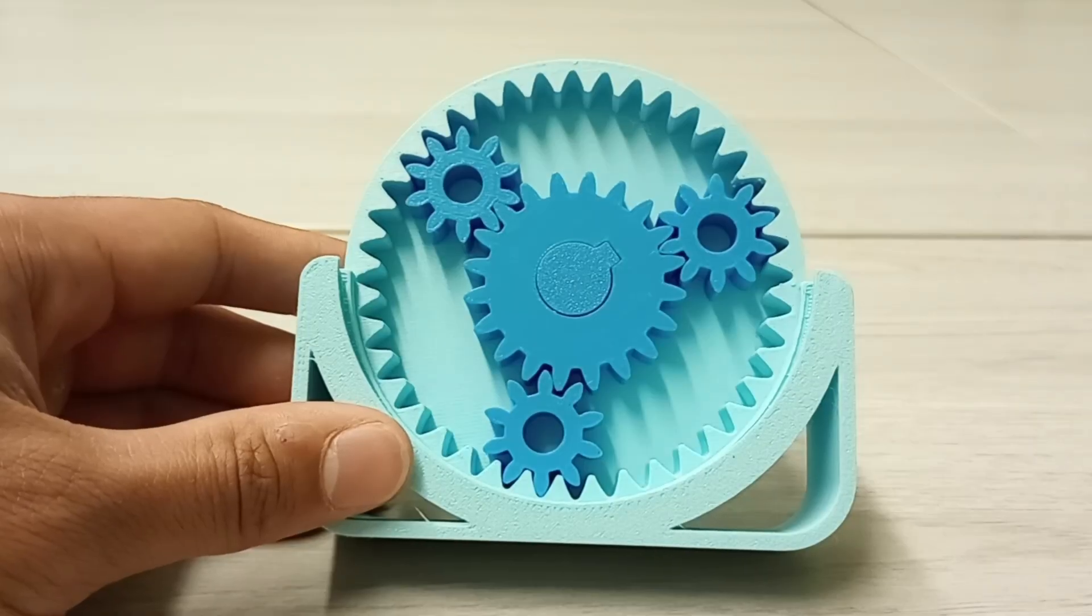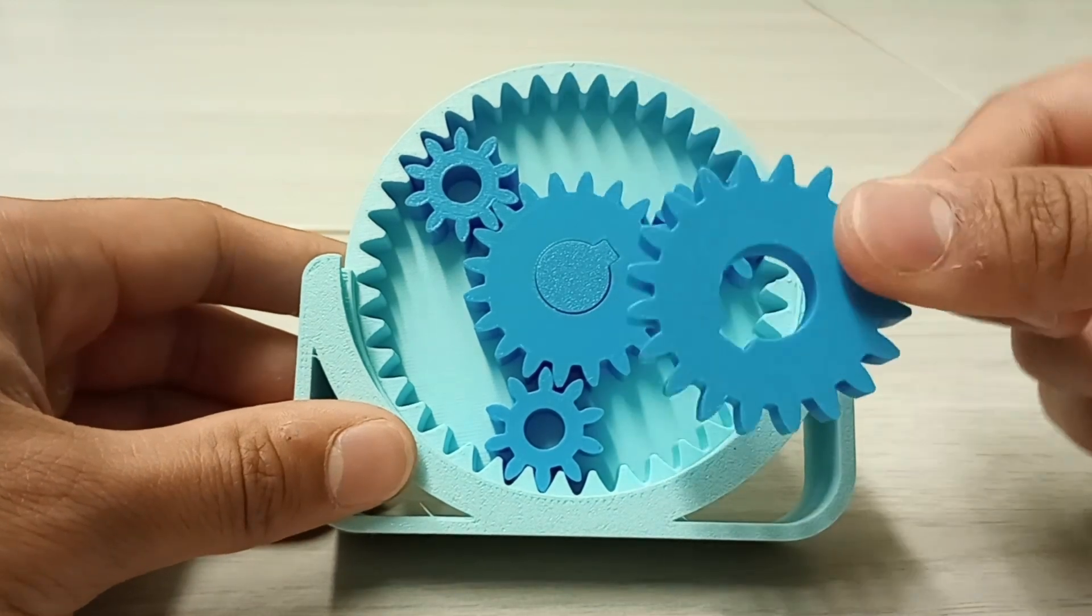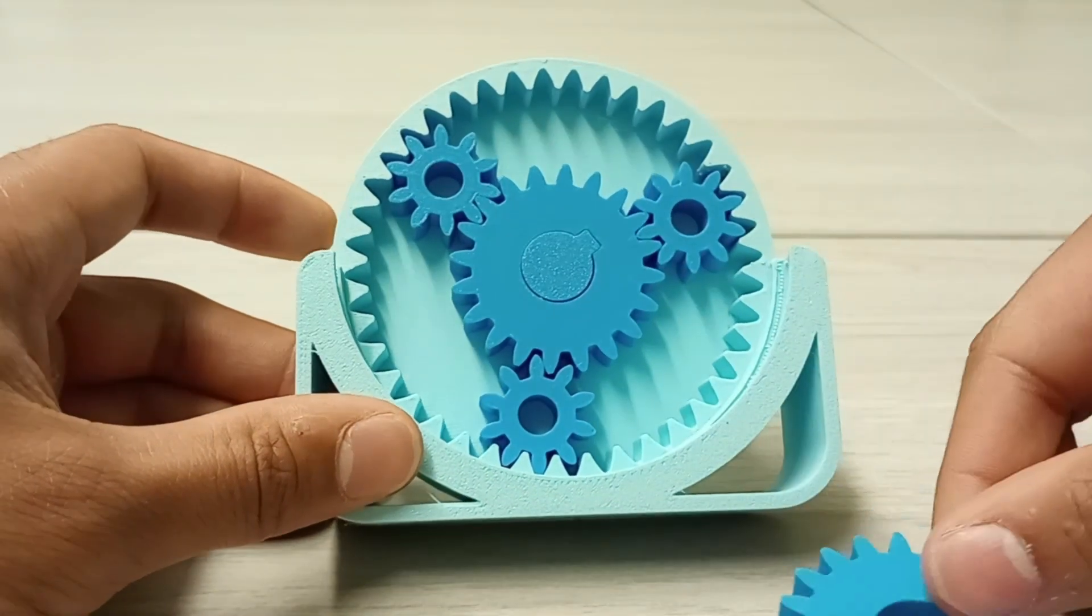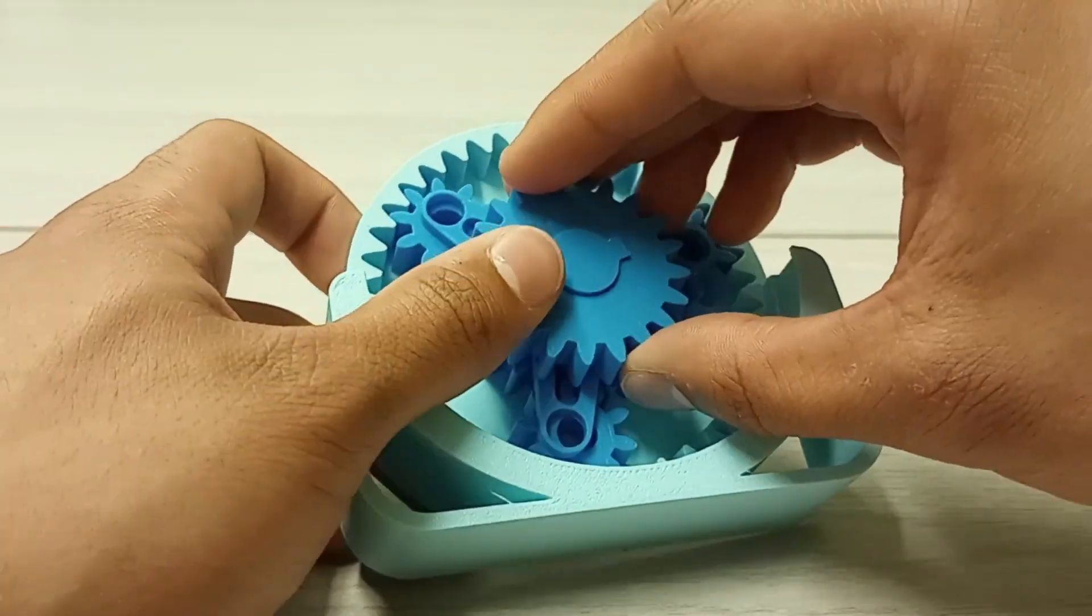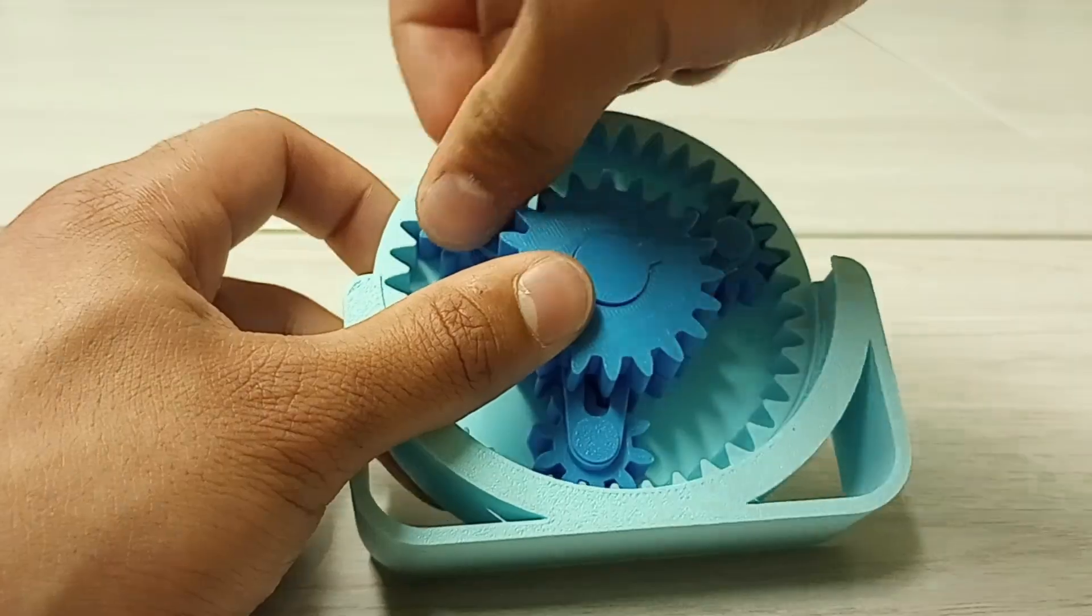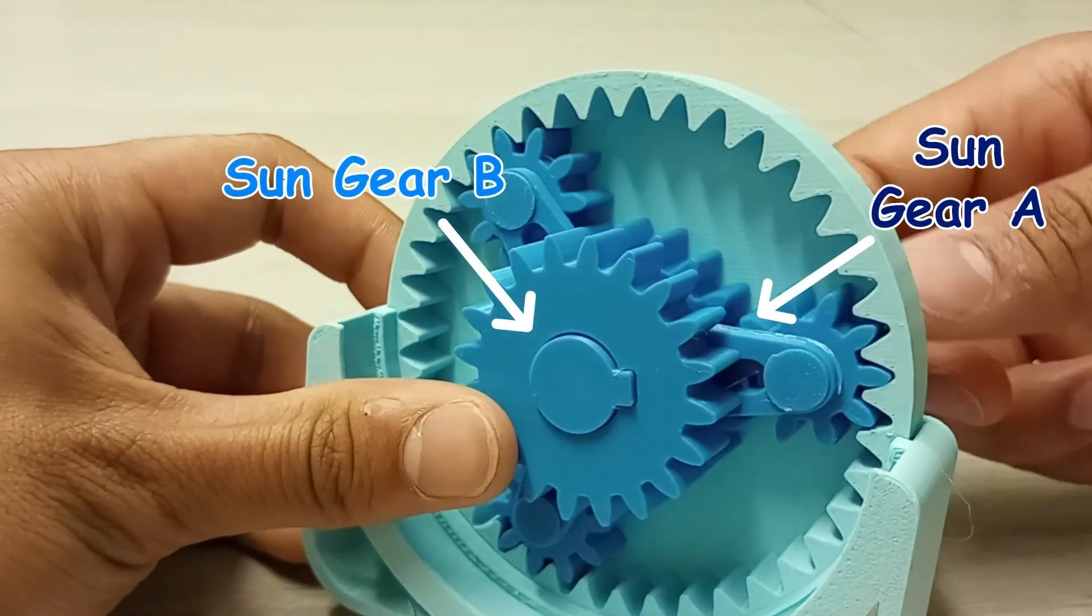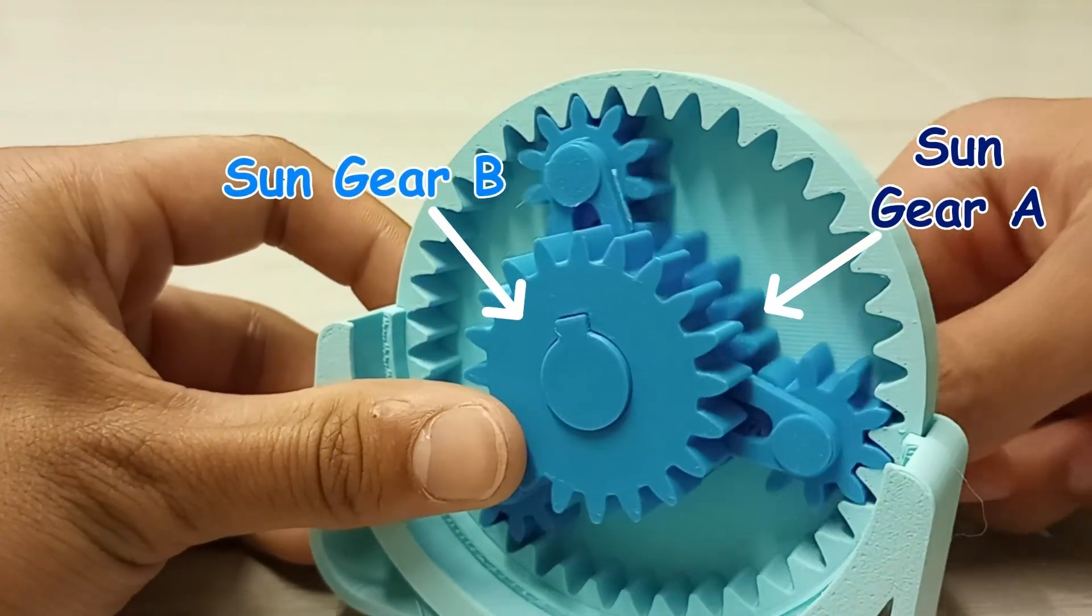And that speed of the planetary gears will be carried on over to a sun gear B which is connected together by a planet carrier A. And you could clearly see the speed difference between the two sun gears.